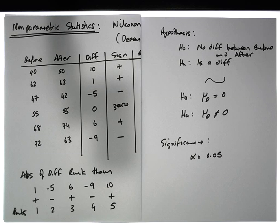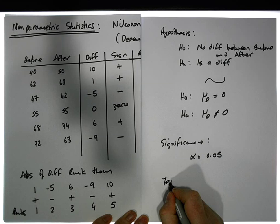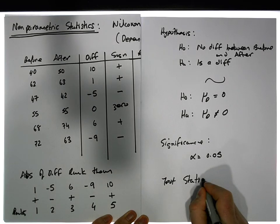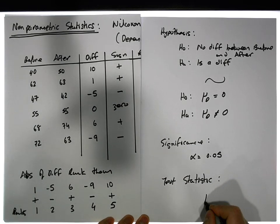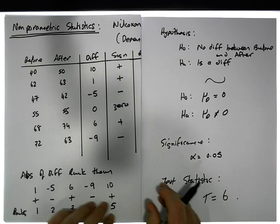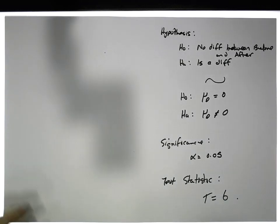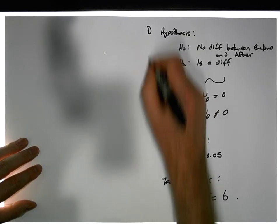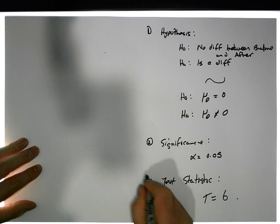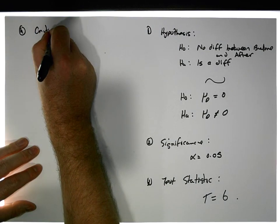We've computed the test statistic. The test statistic as I said is T equals six. We've computed that, and now what we need to do is our critical values. This is step one, step two, step three. Step four is our critical values.